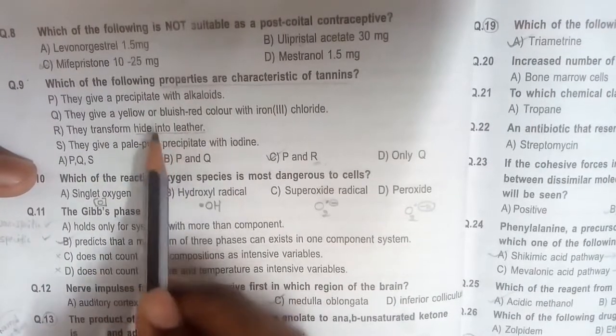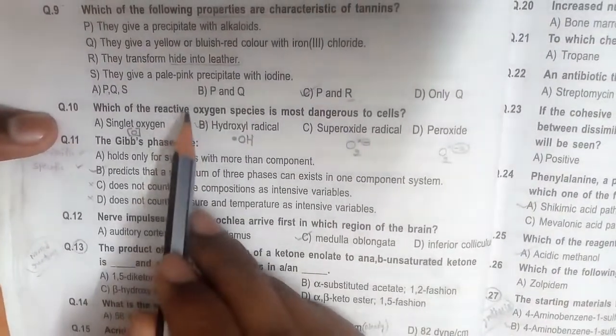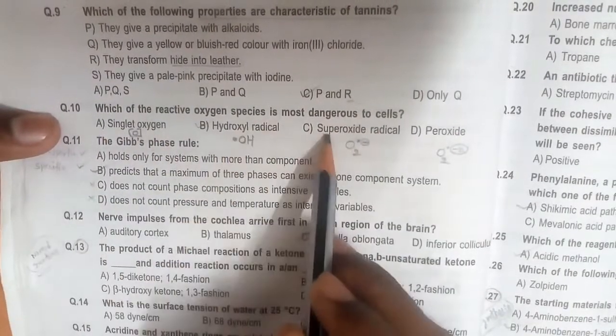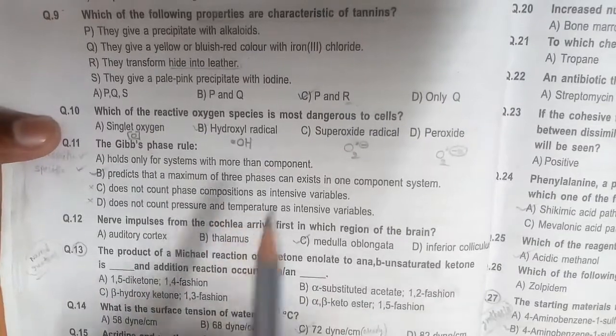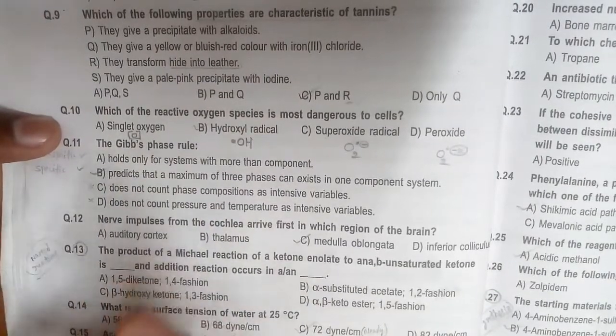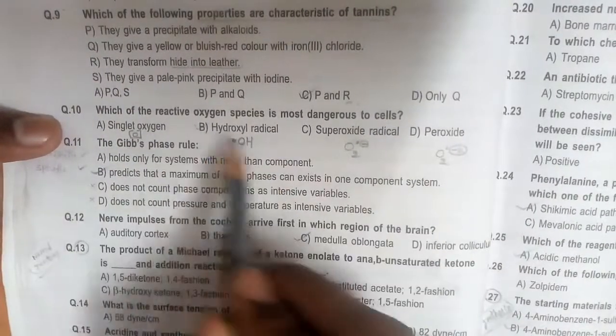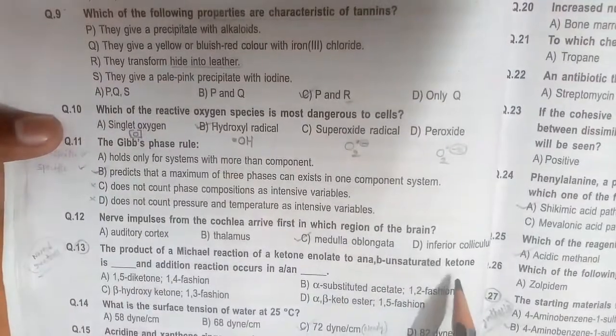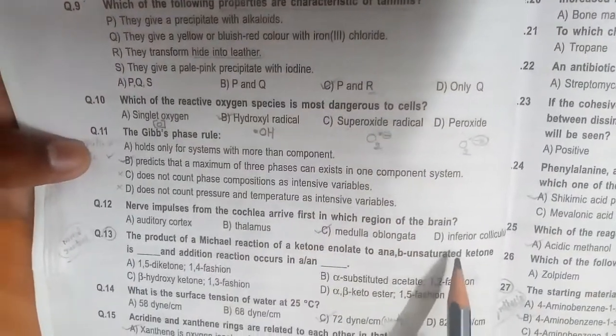Which reactive oxygen species is most dangerous to cells? These four are dangerous to cells, but among these four, which one is most dangerous? You have to know the specific importance and toxicity of the radicals. Among the four, hydroxyl radical is more dangerous, so this is the answer. The remaining are also dangerous but compared to hydroxyl radicals, they are less.